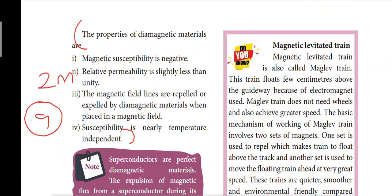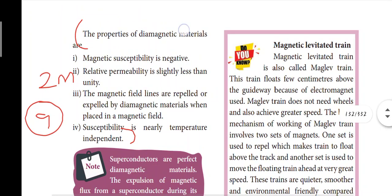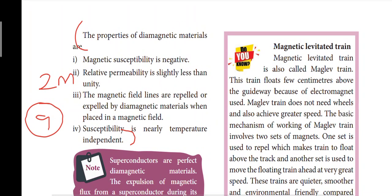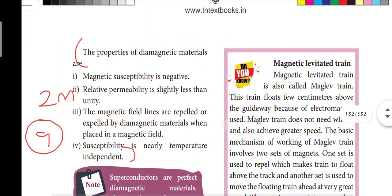If we compare dia, para, and ferromagnetics, we get their properties. The properties of dia, para, and ferro are listed — note that the susceptibility of diamagnetic materials is negative.